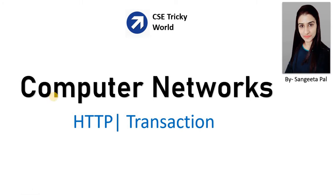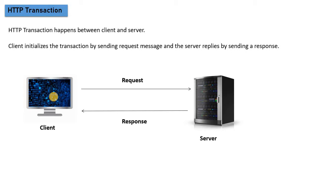In this video on computer network HTTP transactions, we will see what kinds of messages are sent from the client and from the server. An HTTP transaction happens between the client and the server. The client sends a request message to the server to establish a connection, and when the connection is established they exchange the actual messages — for example, the client opens youtube.com.